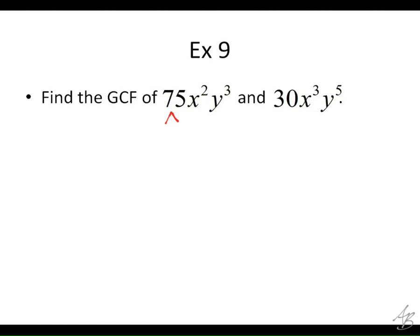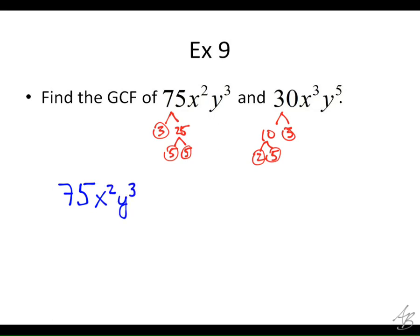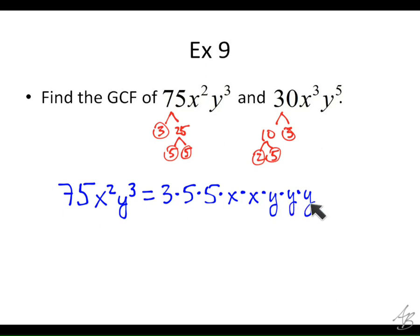Let's do an example. First, focus on the numbers. How do we factor 75? That's 3 times 25, then 5 times 5. And looking at 30, we have 10 times 3 — 3 is prime, and 10 keeps factoring as 2 times 5. So writing the prime factorization, it's not just 75 but 75x²y³. The 75 part is 3 times 5 times 5. And then we have two x's, so: times x times x times y times y times y. For now I want you to write all these out — that's going to help us see why the shortcut works.